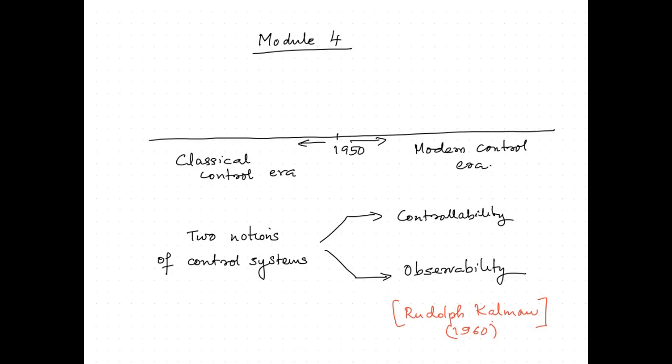Today this session explains two basic notions of control systems: controllability and observability. All developments that happened after 1950 are considered as modern control techniques, and all developments before 1950 are considered as classical control techniques. In that sense, controllability and observability can be treated as two major contributions of the modern control era.